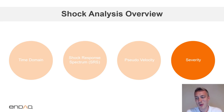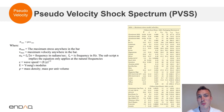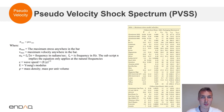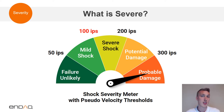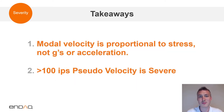When we talk about shock testing, we want to focus on severity. What is severe? Modal stress is going to be proportional to modal velocity, not acceleration or Gs. You can see this equation here on the left that shows that. With that equation, you can calculate different peak modal velocities that different materials can withstand. Generally in industry, they use a 100 inches per second threshold to specify a severe shock event. As that peak pseudo velocity increases, the likelihood for damage also increases with it. The takeaways here: modal velocity is proportional to stress, not acceleration or Gs, and 100 inches per second is characterized as a severe shock.